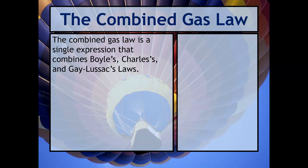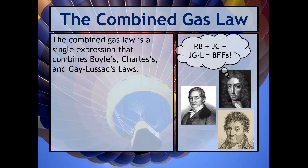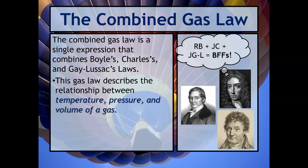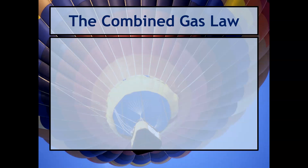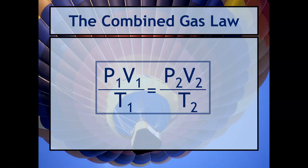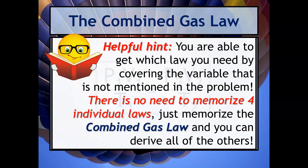Let's talk about the combined gas law. The combined gas law is a single expression that combines Boyle's, Charles's, and Gay-Lussac's laws. This gas law describes the relationship between temperature, pressure, and volume of a gas. It allows you to do calculations where only the amount of gas is held constant. The formula is: P1 times V1 over T1 equals P2 times V2 over T2. A helpful hint: there's no need to memorize four individual laws — just memorize the combined gas law and you can get all of the others.